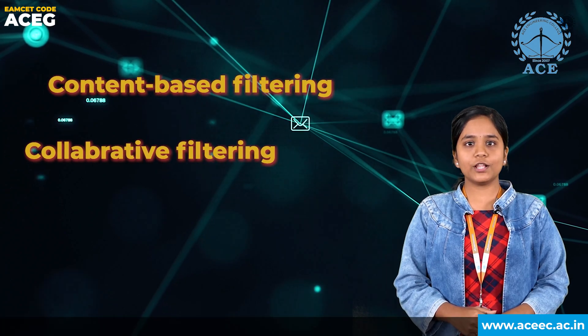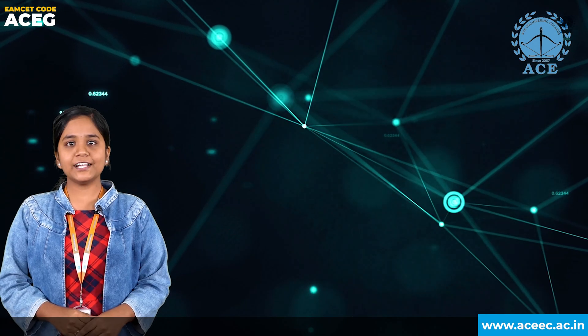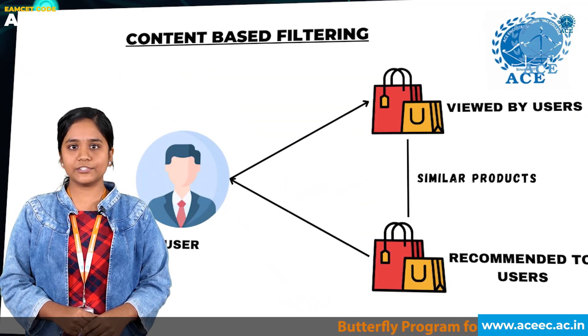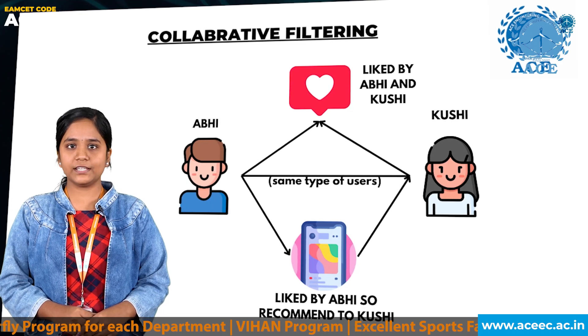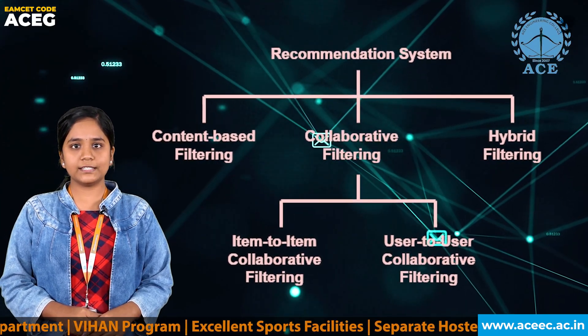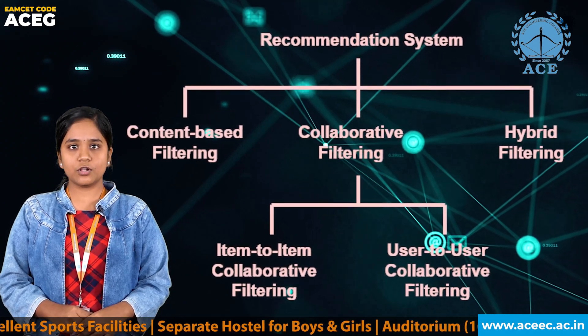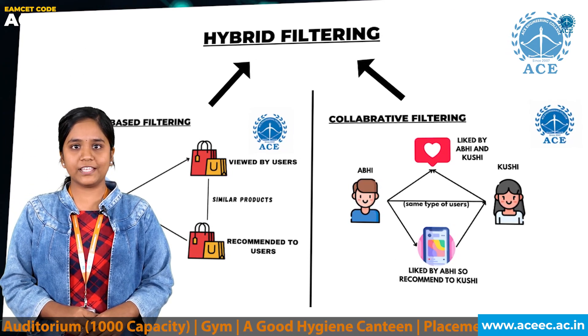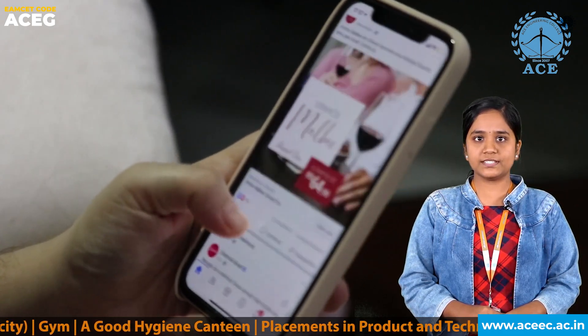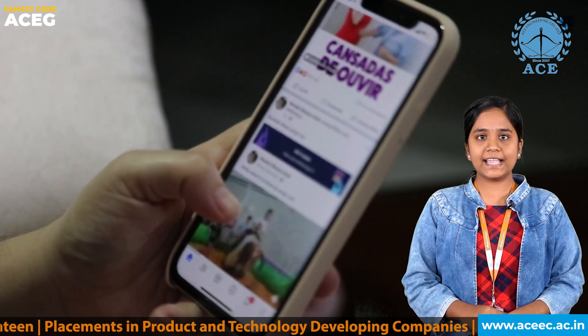This not only helps users in finding what they need quickly and efficiently, but also benefits businesses by increasing customer satisfaction and retention. There are different types of recommendation systems, including content-based filtering, collaborative filtering, and hybrid filtering. Content-based filtering recommends based on similar content; collaborative filtering makes recommendations based on user ID, item ID, and rating, and is further divided into item-to-item and user-to-user collaborative filtering. Hybrid filtering is a combination of both, providing more accurate and diverse recommendations.